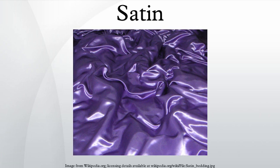If a fabric is formed with a satin weave using filament fibers such as silk, nylon, or polyester, the corresponding fabric is termed a satin, although some definitions insist that the fabric be made from silk. If the yarns used are short-staple yarns such as cotton, the fabric formed is considered a sateen.